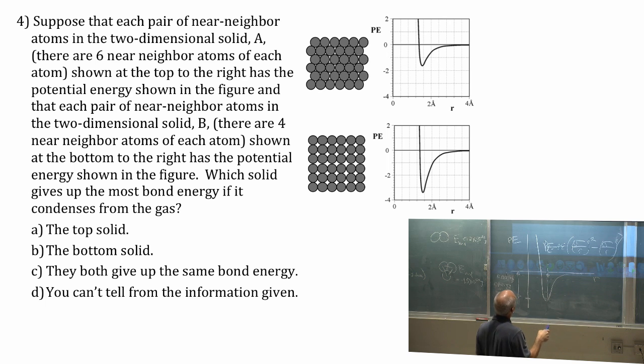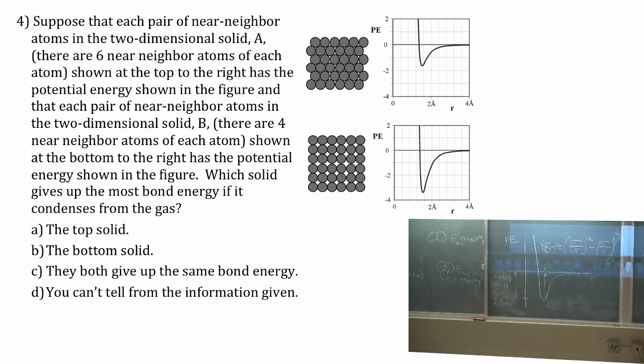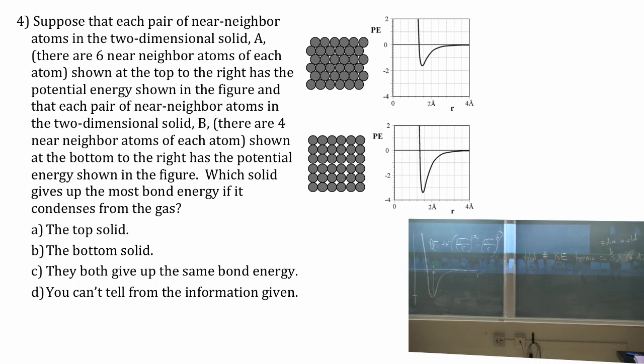How many bonds here? Well, let me just finish it. That potential energy is for any two. This potential energy right here is for any two atoms in this solid. These are both solids. Which solid gives up the most bond energy when you condense it from a gas? Which solid gives up the most bond energy when you condense it from a gas? That's my question for you.